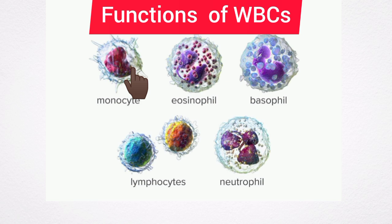Monocytes are the largest cells among the leukocytes. Like neutrophils, monocytes are also motile and phagocytic in nature, and wander freely through all tissues of the body. Monocytes play an important role in the defense of the body and, along with neutrophils, provide the first line of defense.